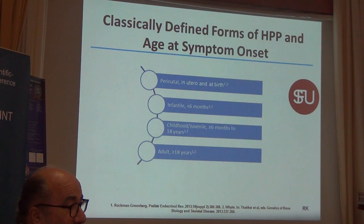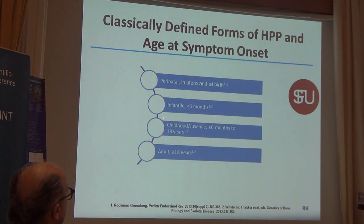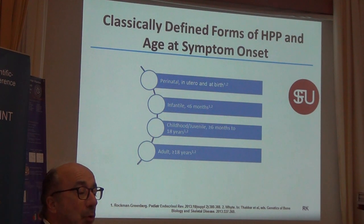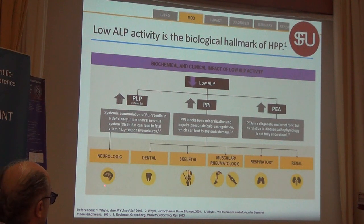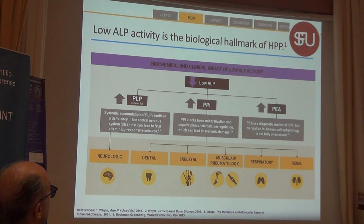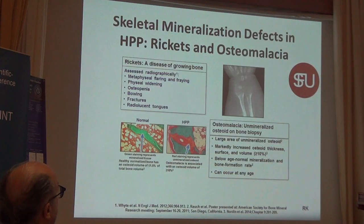There are different forms of HPP: perinatal, which has a very high mortality rate; infantile; childhood; and adult, as well as the childhood-onset adult form. It can affect different organ systems: neurologic, dental, skeletal, muscular, respiratory, and renal — due to the accumulation of substrates that cannot be metabolized because of lacking alkaline phosphatase activity.